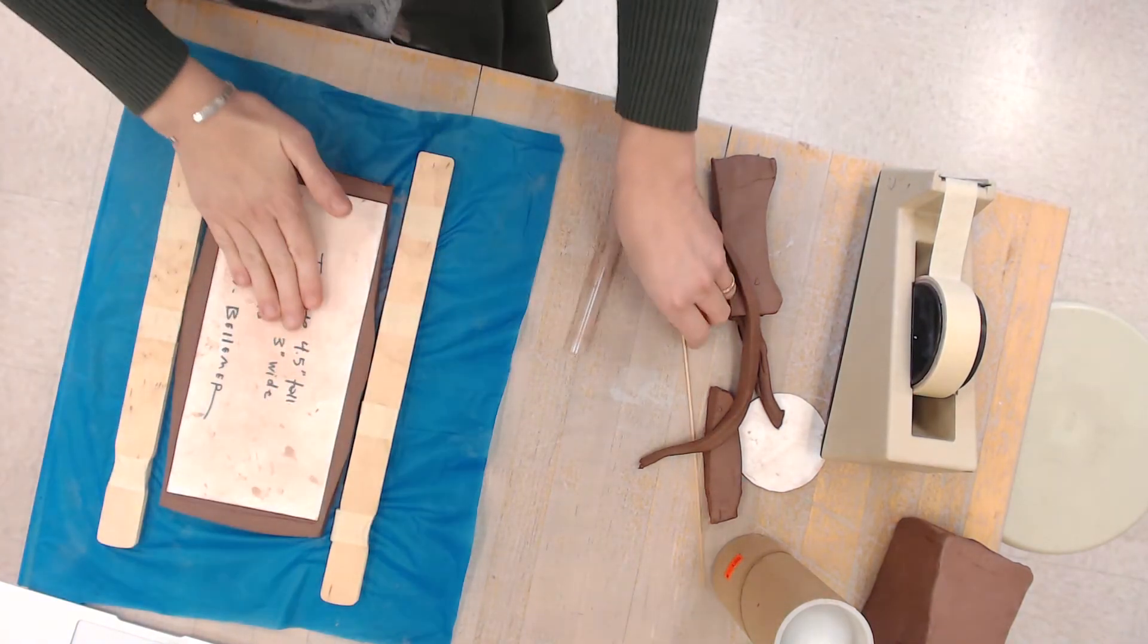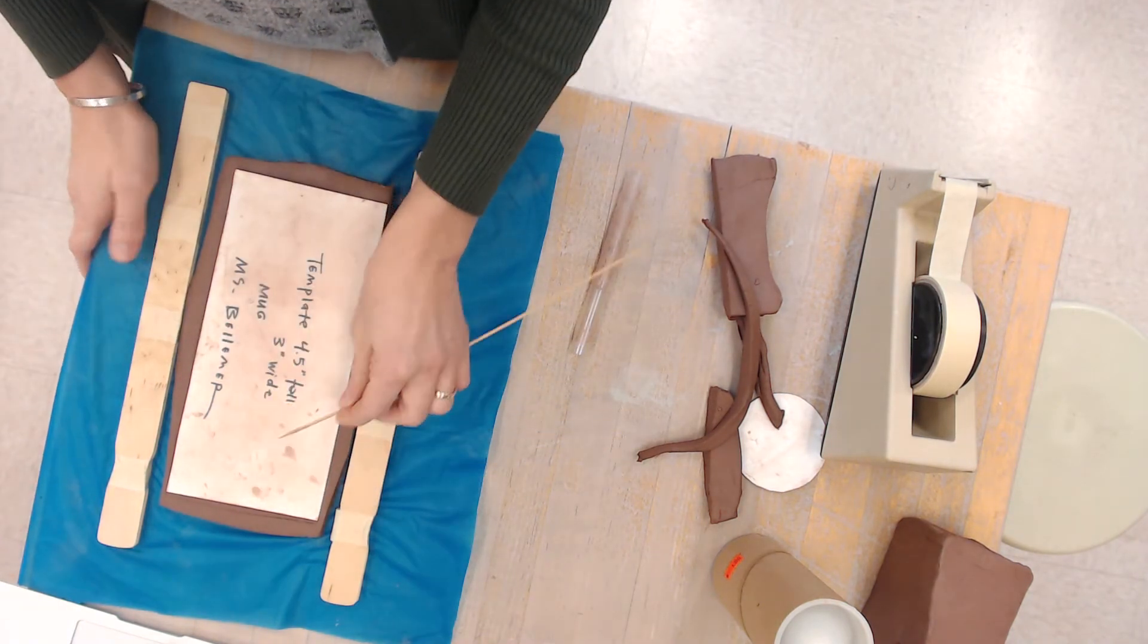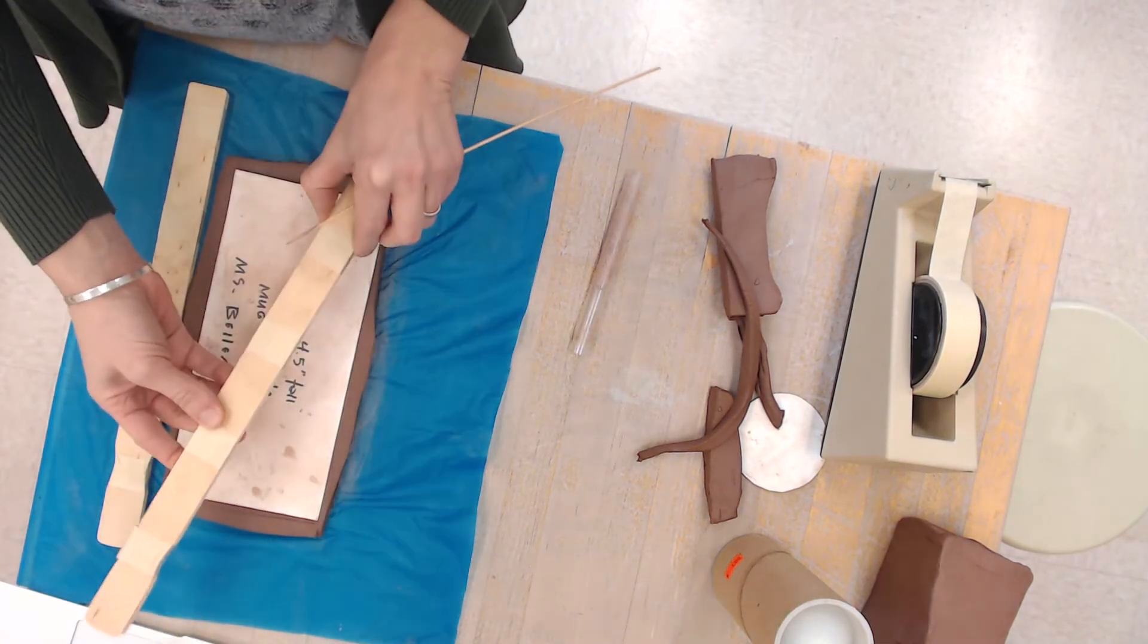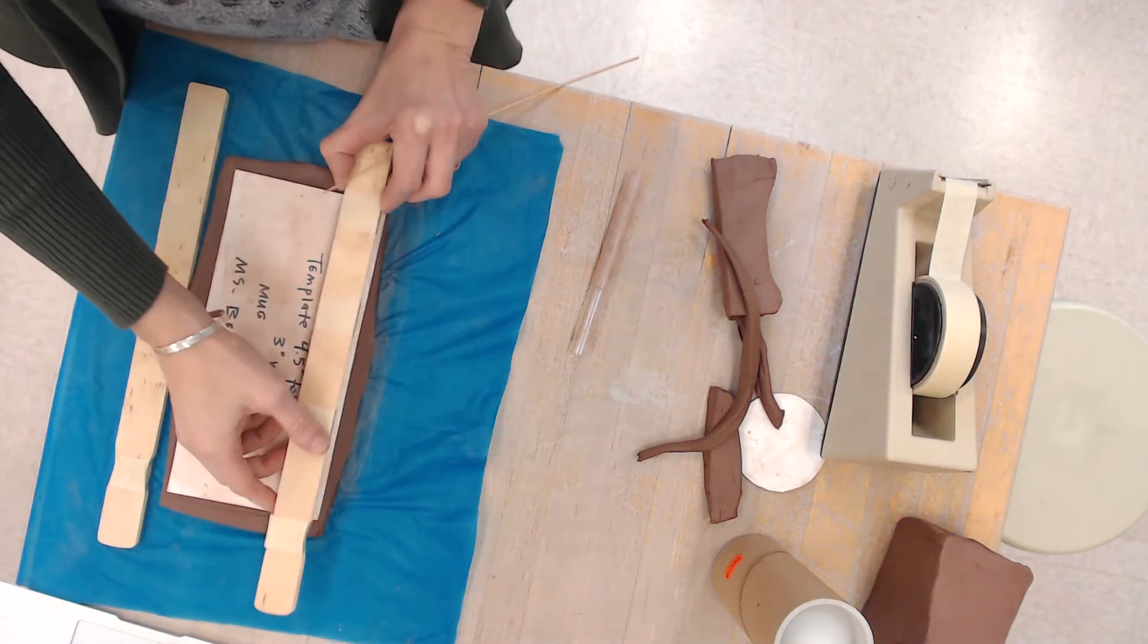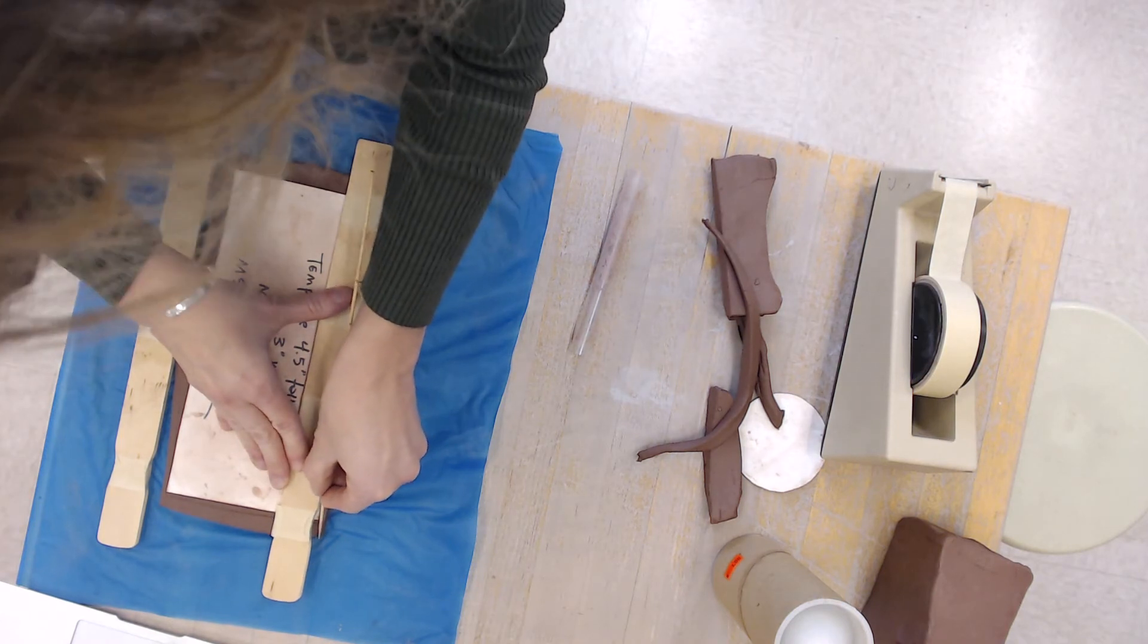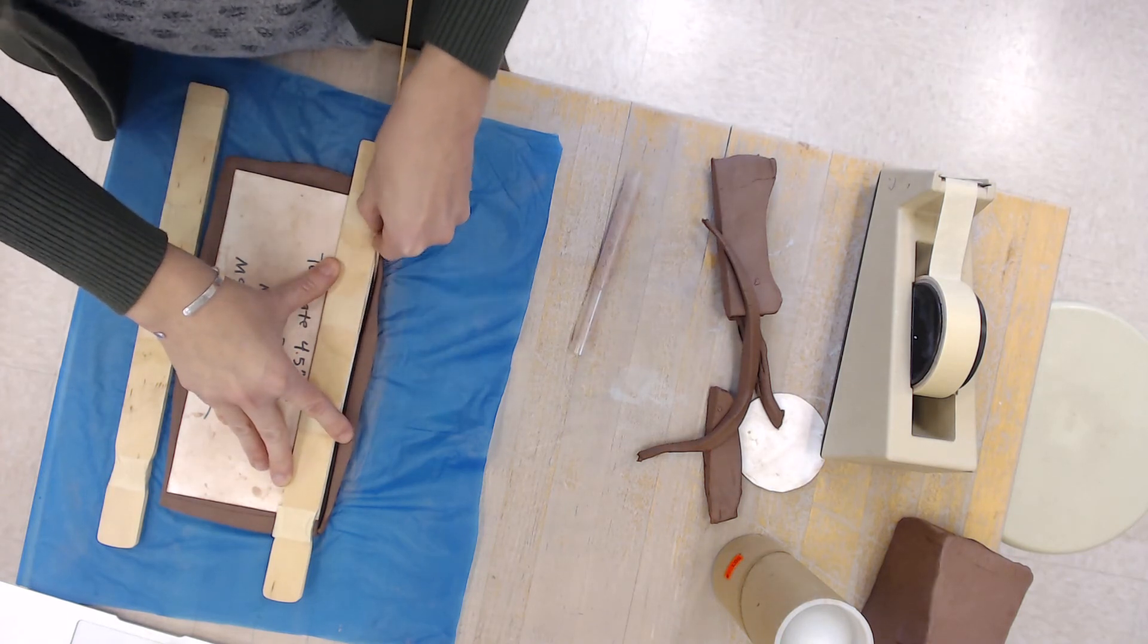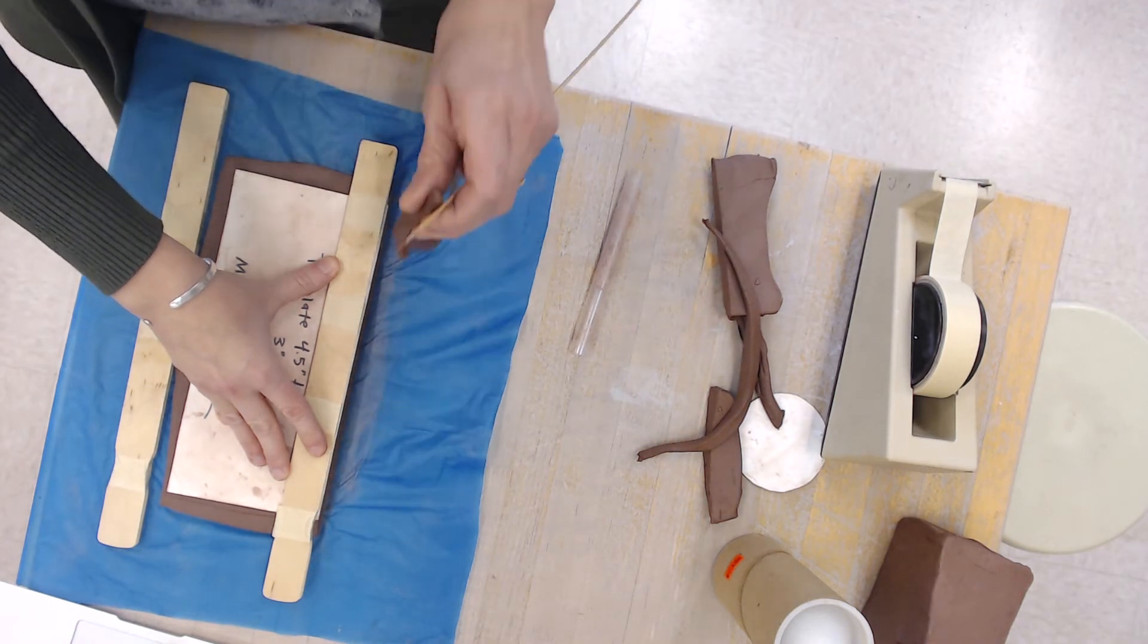And I'm going to hold, one thing that you might find helpful is using the wooden stick to help you. And I'm going to hold, put my template up and then hold that wooden stick against the template. Make sure it's nice and even. And this is going to ensure that you get a nice straight edge. I'm going to pull that clay off.